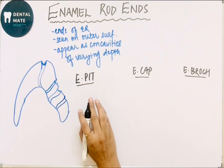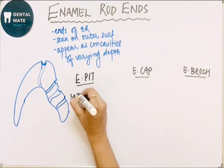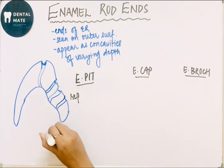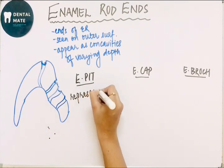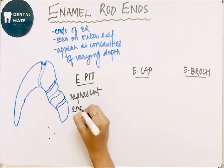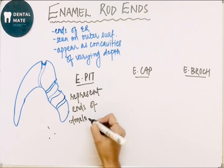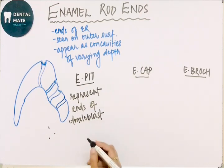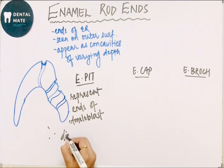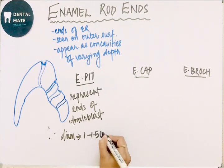What is the enamel pit? It represents the ends of ameloblast. The enamel pit is seen representing the ends of ameloblast. Its diameter is 1 to 1.5 micrometers.